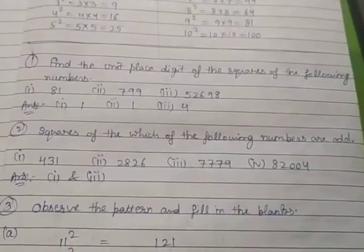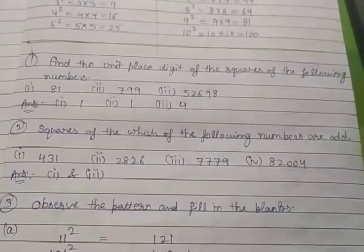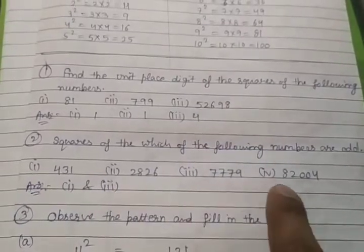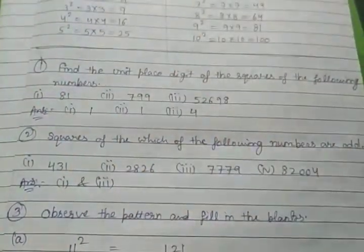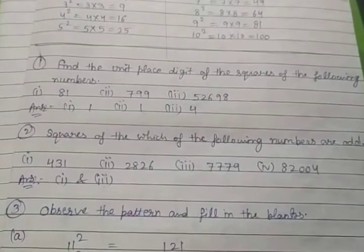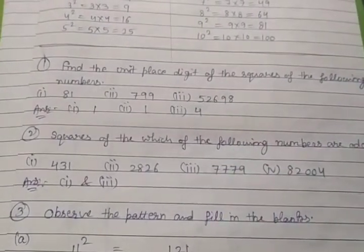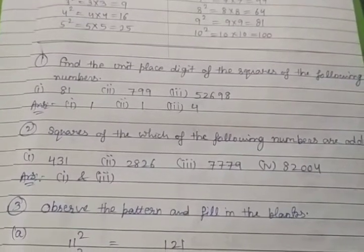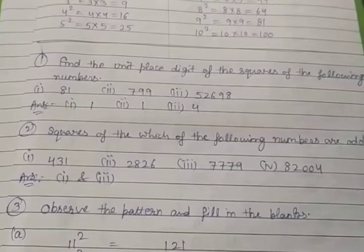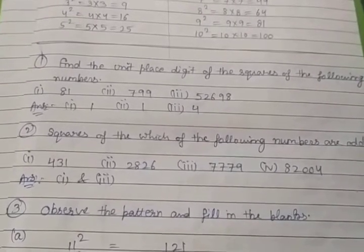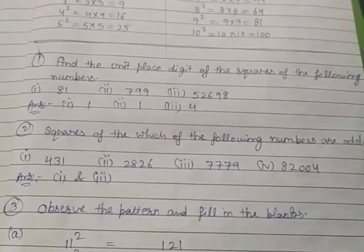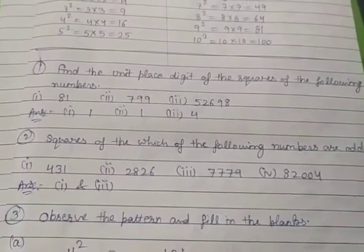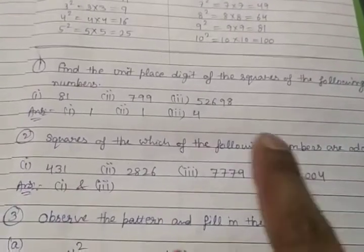Squares of which of the following numbers are odd? Which are odd numbers? Odd numbers do not divide by 2. Even numbers are 2, 4, 6, 8, 10, 12. Odd numbers are 1, 3, 5, 7, 9, 11.